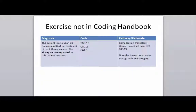To show you the pathway: in the case of a transplant, you're going to start with 'complication' as your main term, then 'transplant,' then 'kidney, specified type NEC,' which gives you a T86.19 code, and there are instructional notes that go along with this category.